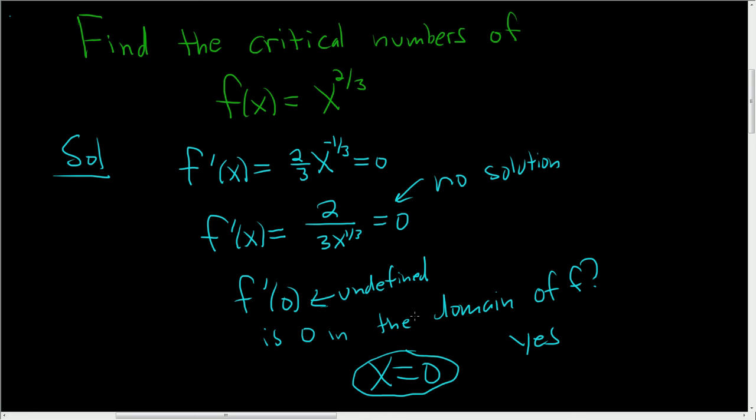Again, a critical number is a number in the domain where the derivative is 0 or undefined. So in this problem, we took the derivative, set it equal to 0, out of luck. Then we checked, is it undefined? Yep. The final check is, is it in the domain? And in this case it was, so we did have a critical number.